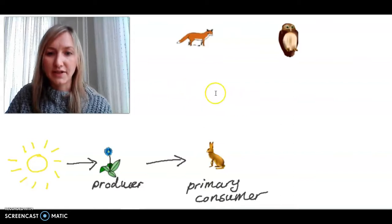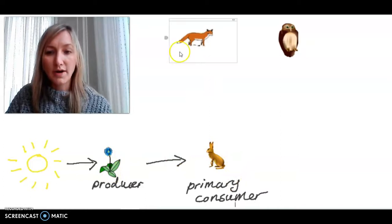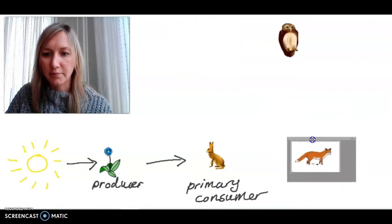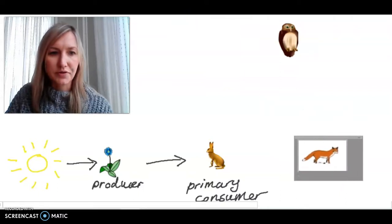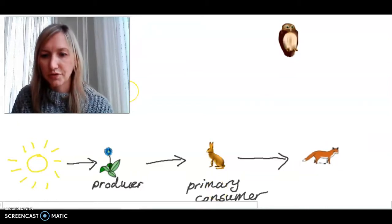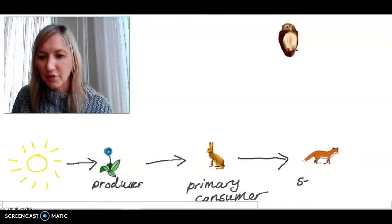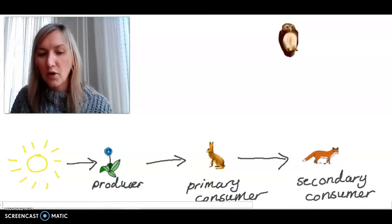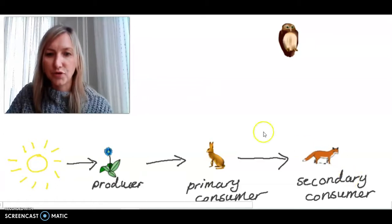Now we need to look and find our secondary consumer. The rabbit eats the plant, but who is going to eat the rabbit? One option here is our fox. So let's move that into place on the food chain. Now put the fox here. We also need to add in our arrow showing the transfer of energy from the rabbit to the fox. And to label the fox as our secondary consumer. We're just labeling them here. Secondary consumer is the fox. And now we have a completed food chain.